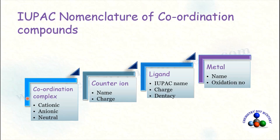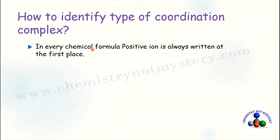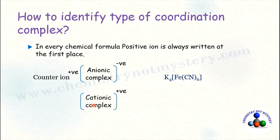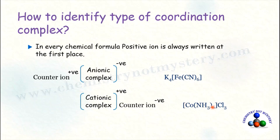Let's learn how to identify the type of coordination complex. In every chemical formula, the positive ion is always written at the first place. So if the complex is anionic, the counter ion is written before the bracket — for example, potassium is the counter ion written before the coordination sphere, meaning this is an anionic complex. If the complex is cationic, the counter ion is written after the coordination sphere, meaning this complex is cationic in nature.